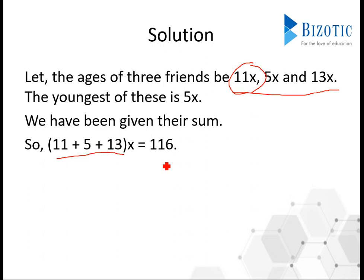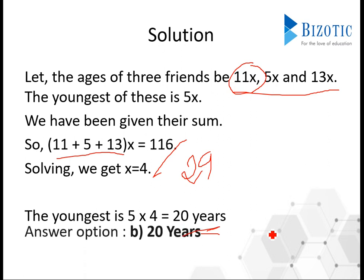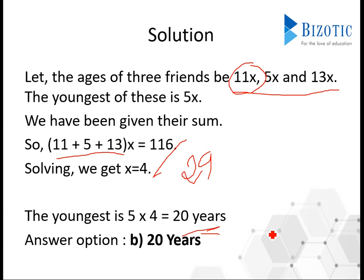You just have to add 13 plus 11, which is 24, plus 5, which is 29. And x is equal to 116 divided by 29, which gives you x equal to 4. Now the youngest age is 5x, so 5 into 4, which gives you 20 years. The age of the youngest child is 20 years. The answer is option B, 20 years.